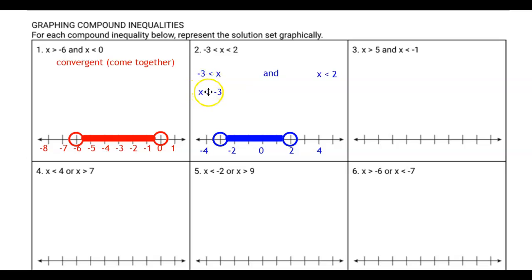To graph x is greater than negative three, we're going to start at negative three, open circle there because there's no line underneath it, and we're shading upwards, greater than. And then x is less than two, which means starting at two, we're going to shade downwards. So there's our correct and complete graph.